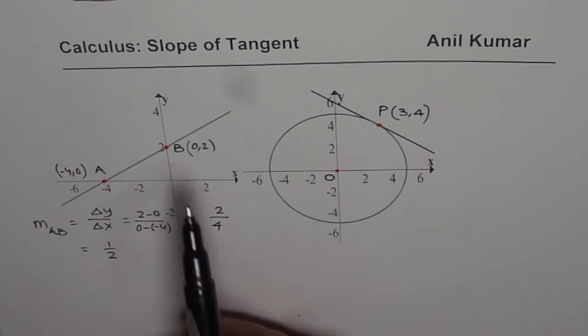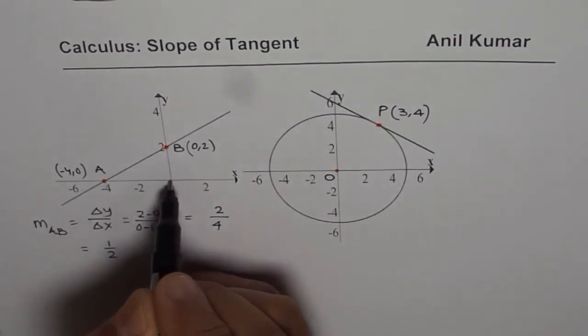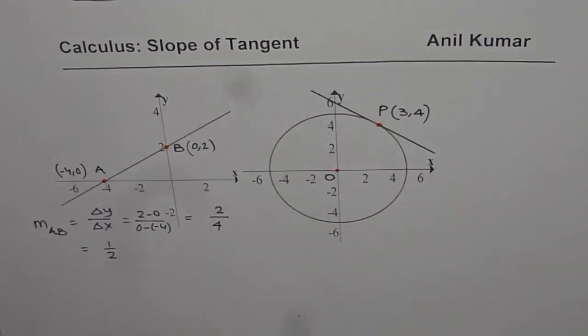Now you could have always found using this particular triangle also. Rise is 2 and run is 4. Positive slope since the line is rising. So that's simple. That is how you find slope of a line.